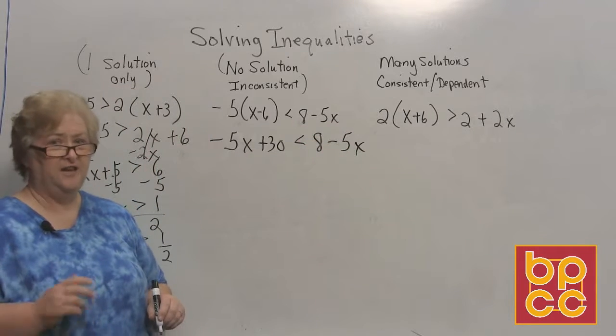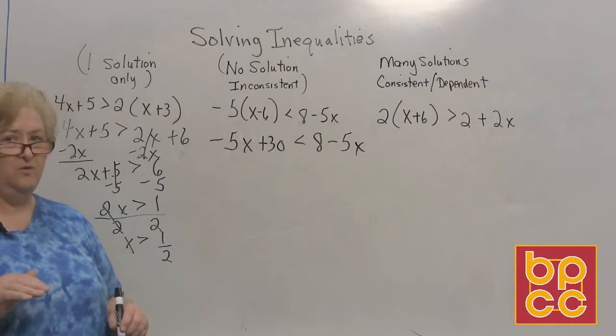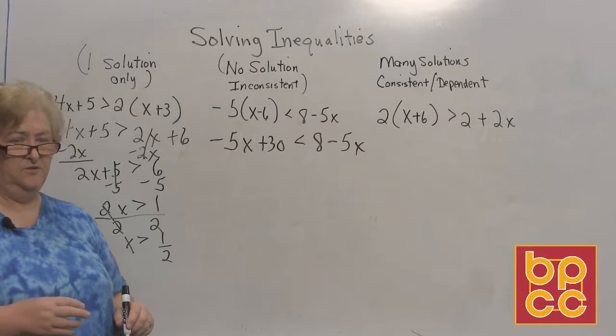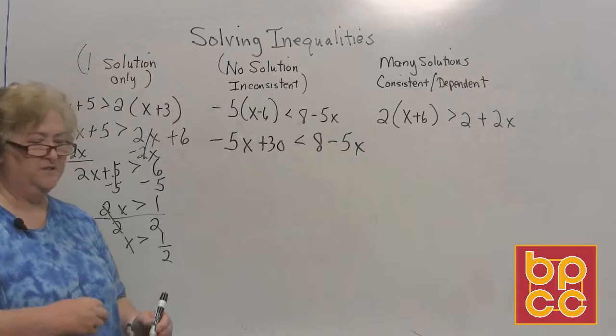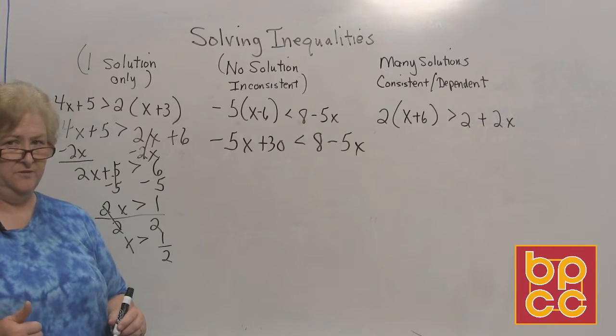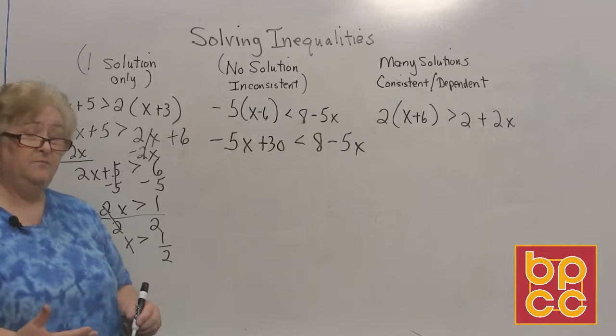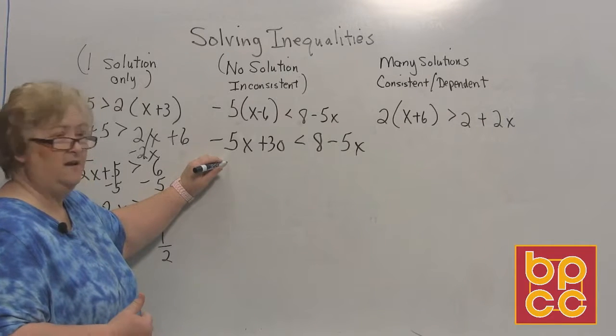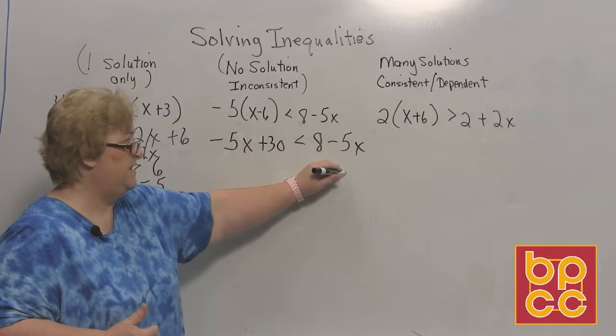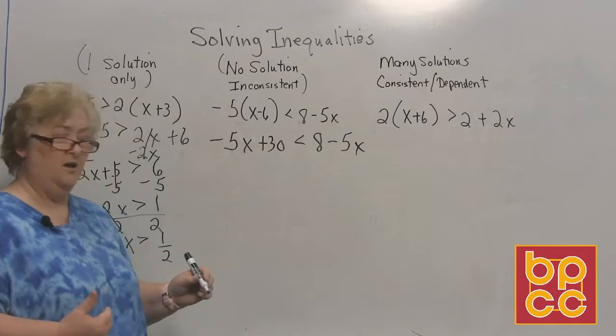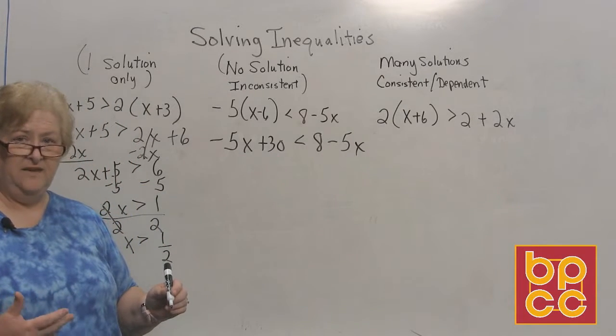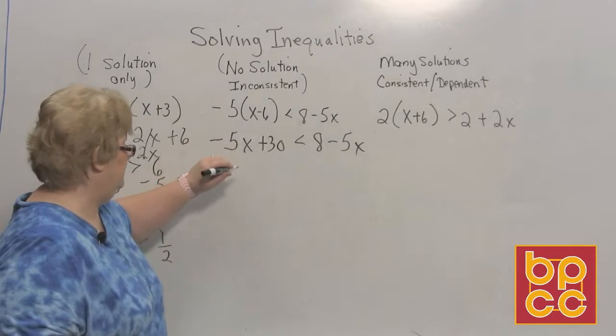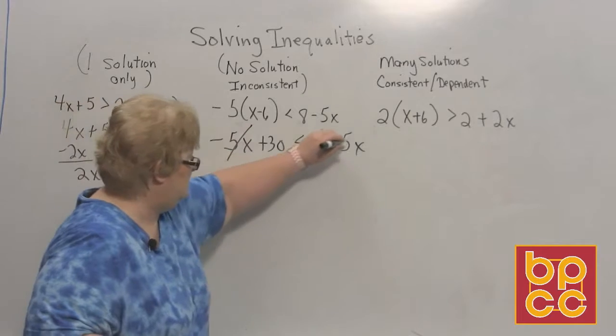Now the first thing I always do is I start with my x's, not my numbers. If you're going to move things and get the x's on one side and the numbers on the other, let's start with our x's. Okay, I'm getting ready to move my 5x. But look what happens. If I do a plus 5 here, that clears. And if I move the plus 5 over here, it doesn't matter which way I go. Either way, the negative 5x's are going to clear out. So I'm just going to clear them out. So they're gone.